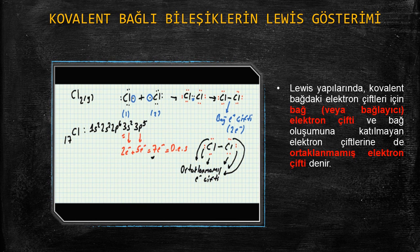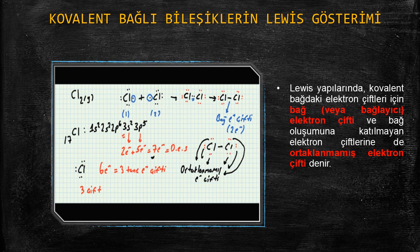Burada dikkat edilmesi gereken husus şu: bağ yapmış elektron sayısı 2 elektron, yani 1 elektron çifti. Klorun etrafında 6 tane elektron var, bu da 3 tane elektron çifti demek. Yani klorun ortaklanmamış elektron çifti 3 tanedir. Klor atomunda bağ yapımına katılmayan 6 tane elektron, yani 3 çifti elektron bulunmaktadır. 1 çifti elektron ise bağ yapımına katılmıştır.